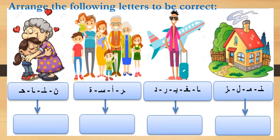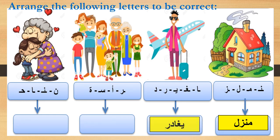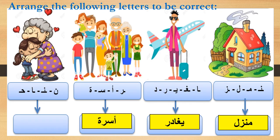رتب الحروف لتكون كلمة صحيحة - arrange the following letters to make a correct word. Look at the picture. The first word becomes: منزل. Second: يغادر. Third: أسرة. Fourth: حنان.